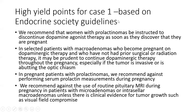Covering some high-yield points from the guidelines: the patient will initially be started on bromocriptine, but should be instructed to discontinue dopamine agonist therapy as soon as they discover they are pregnant — this applies to both micro and macro prolactinoma. In selected patients with macro adenomas who become pregnant on dopamine agonist therapy and who have not had prior surgical or radiation therapy, it may be prudent to continue dopamine agonist therapy throughout pregnancy, especially if the tumor is invasive or abutting the optic chiasm.